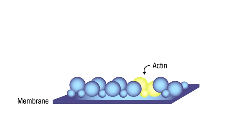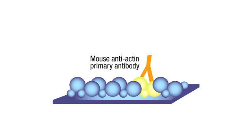For example, let's say you want to probe a human cell lysate for actin, and your primary antibody is a mouse anti-actin antibody, which means that the antibody was collected from a mouse and specifically binds to actin.